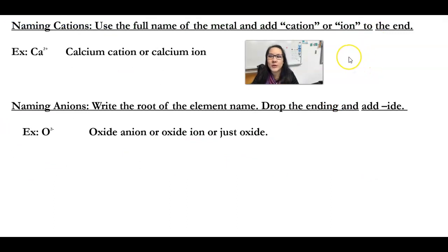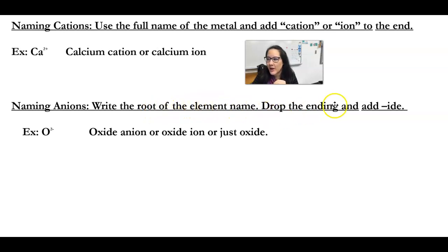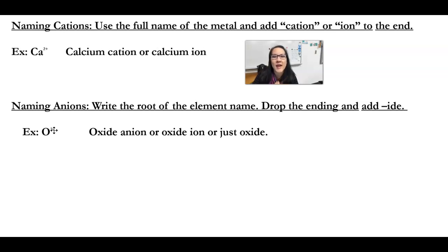When we name cations, we use the full name of the metal and then add the word cation or ion to the end. For example, if you had Ca²⁺, it's not just neutral calcium — it's calcium with a plus two charge, so we call it the calcium cation or the calcium ion. When we name anions, we change the root of the element name to have a suffix of -ide. So if oxygen has a negative two charge, we're not going to call it oxygen anymore — it's going to be called oxide, or the oxide anion.